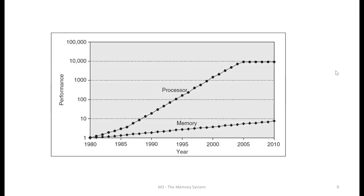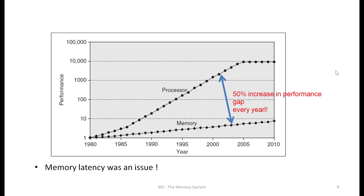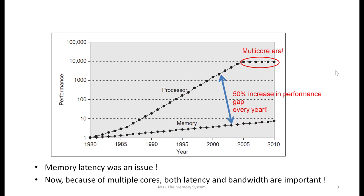Over the years, both memory speed and processor speed have increased, but the rate at which memory performance has improved is much slower than processor speed. Around 2005 we moved from single-core to multi-core processors. Until that point, memory latency was the main issue; post that, in the multi-core era, we face both memory latency and memory bandwidth problems. This is what we call the memory wall.